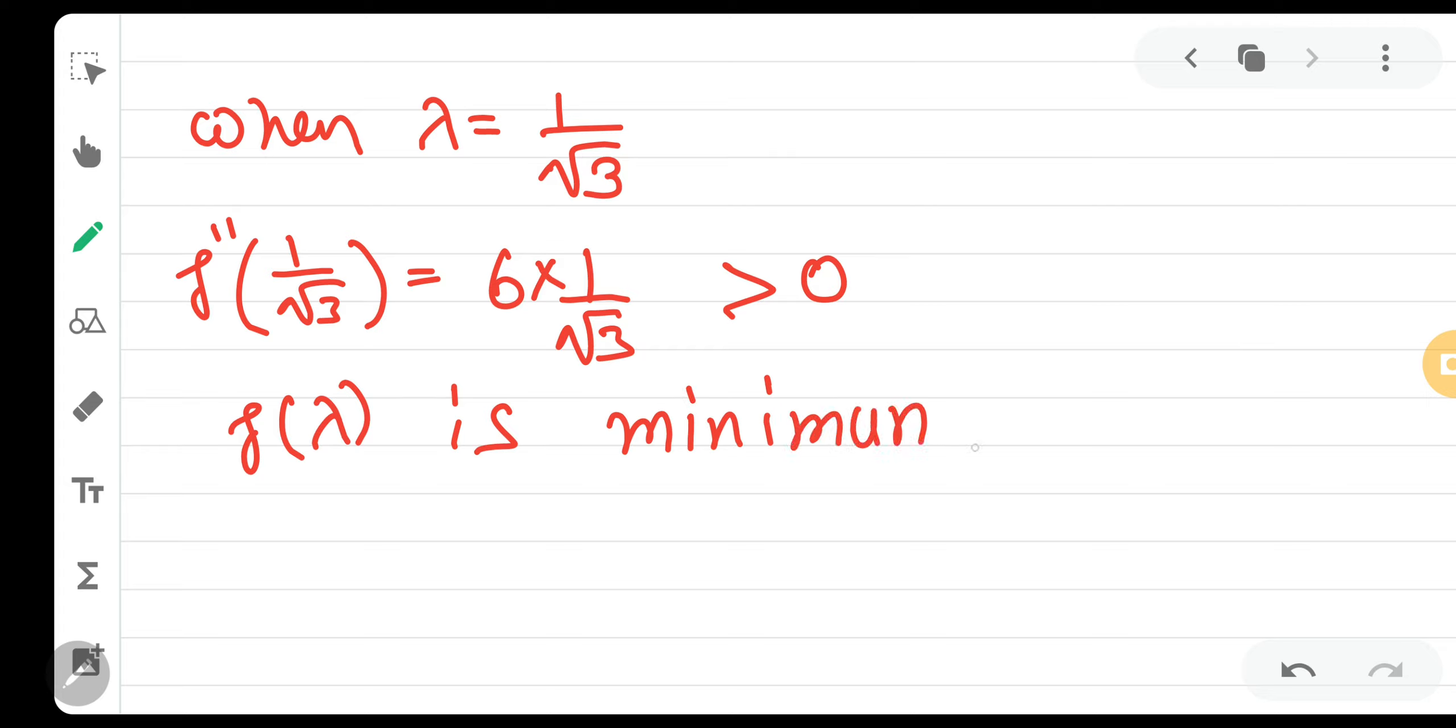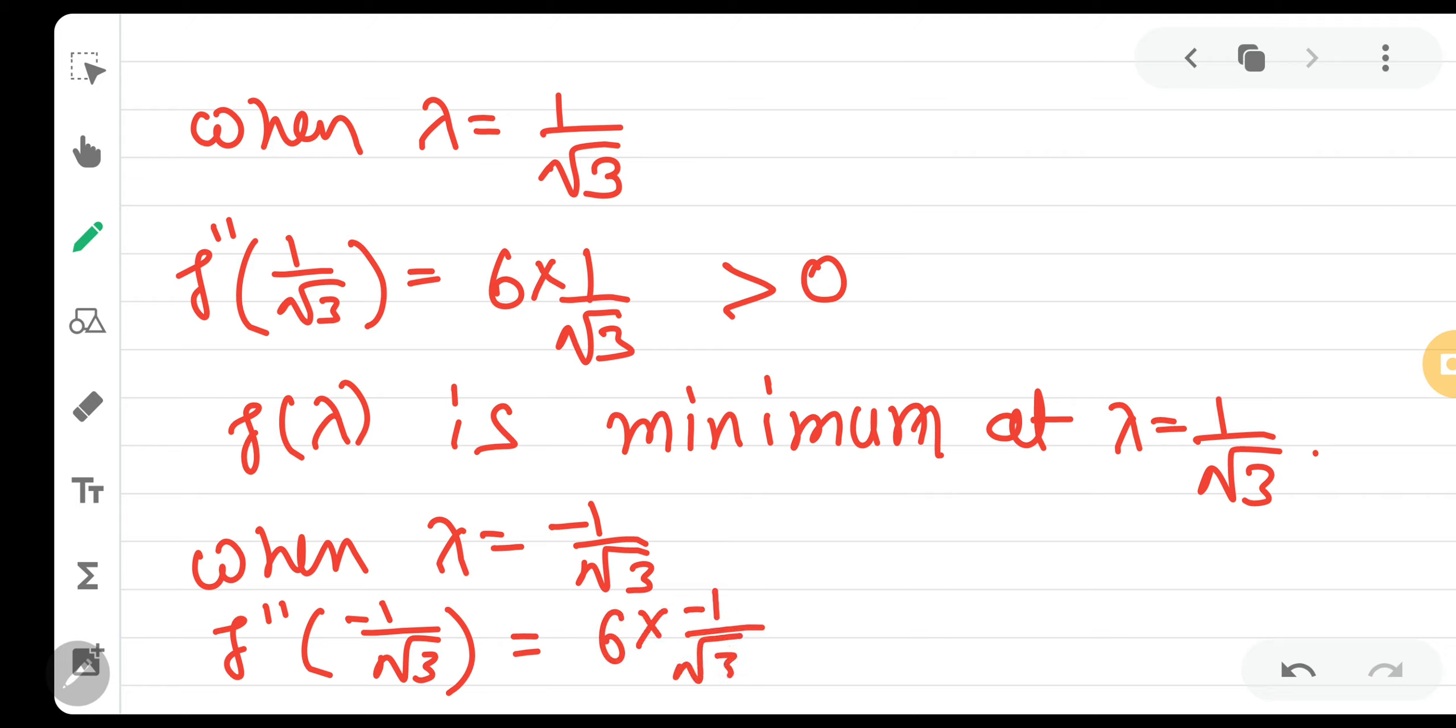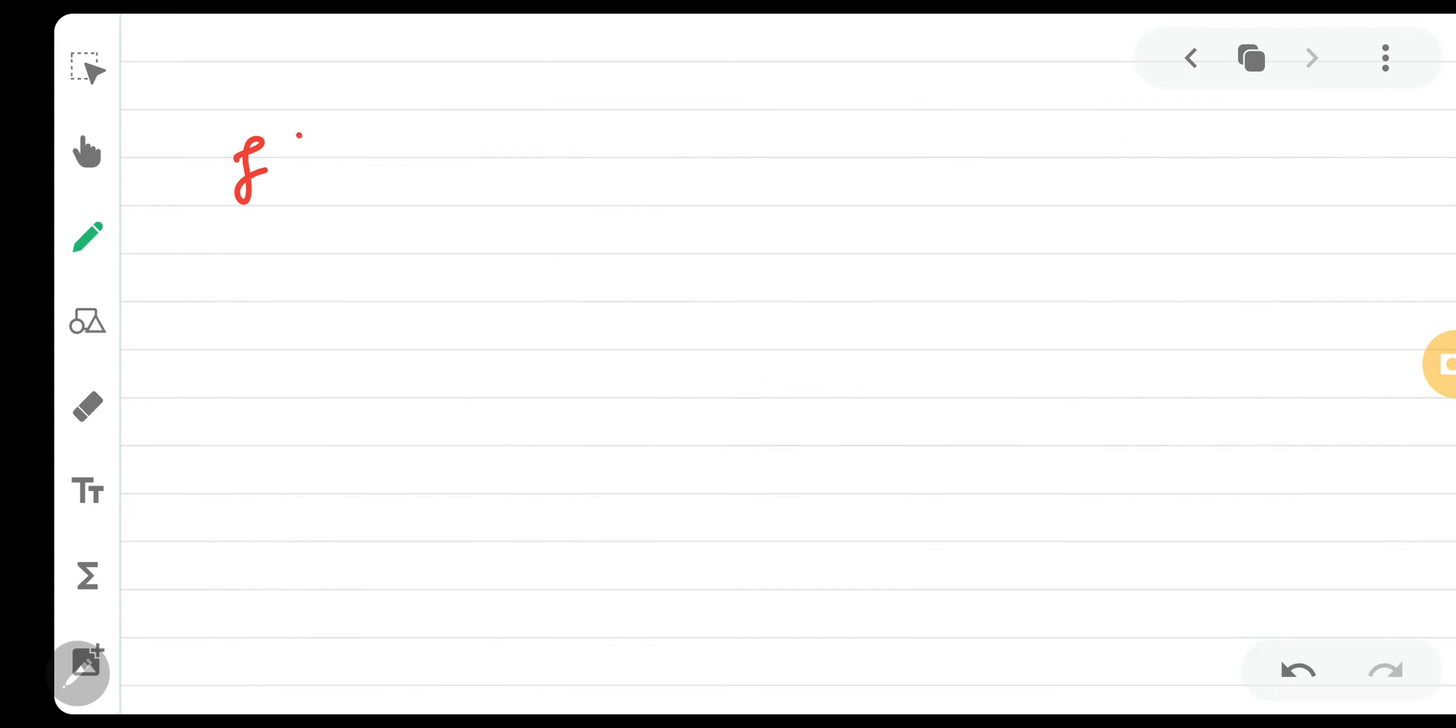So naturally if you have lambda equals minus 1 by root 3, then f double dash lambda equals 6 into minus 1 by root 3, which is negative, less than 0. So at lambda equals minus 1 by root 3, f of lambda is maximum.